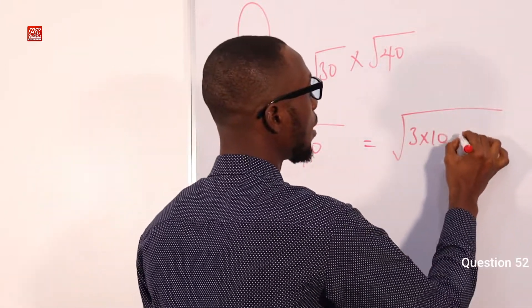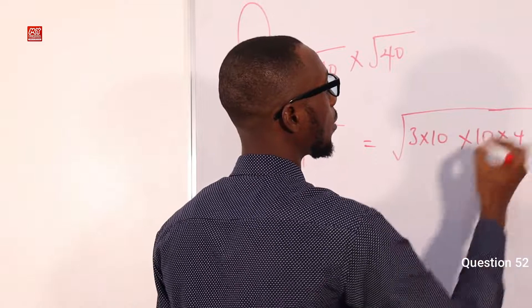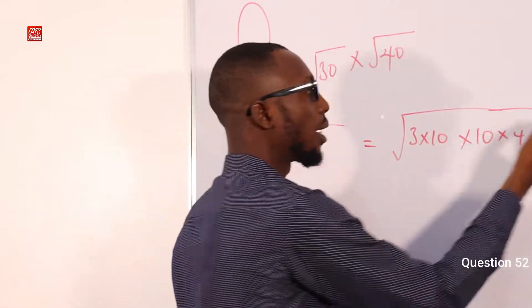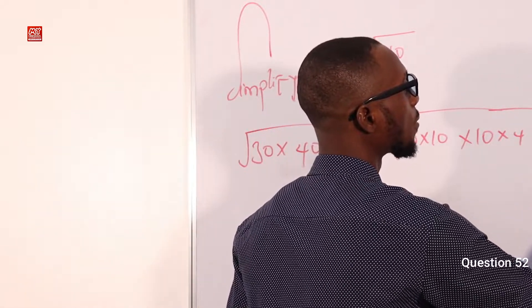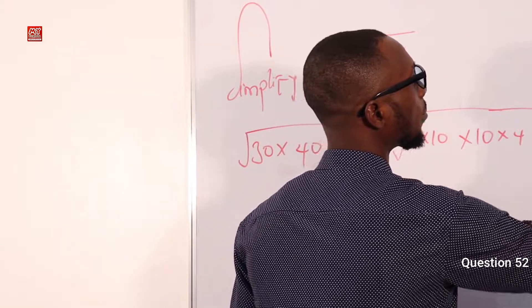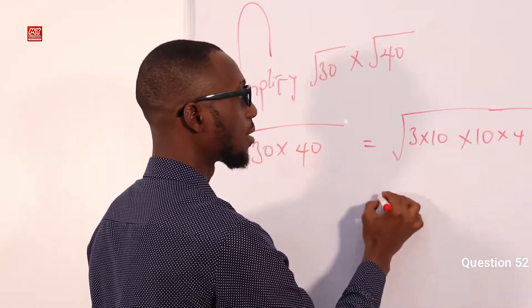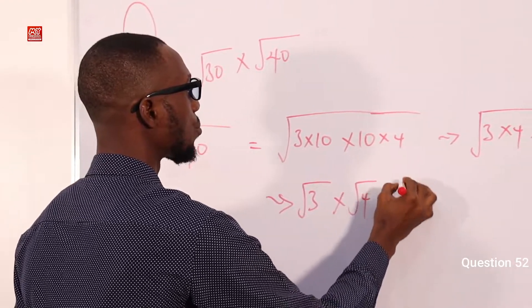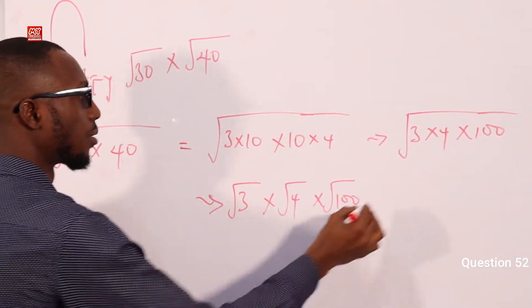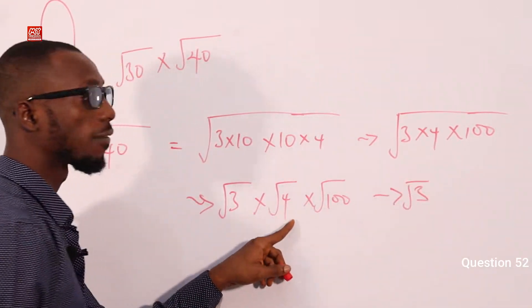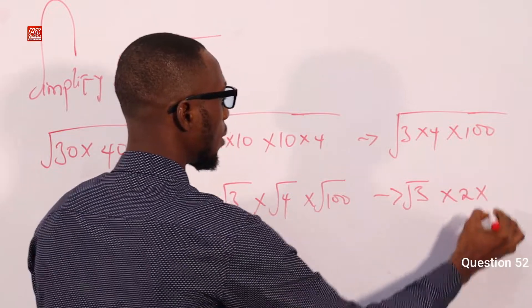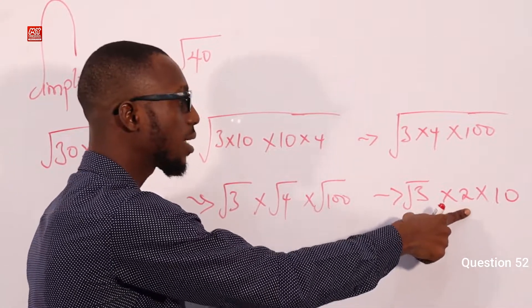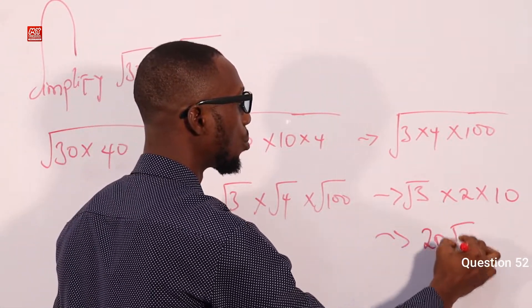30 is 3 times 10, and 40 is 10 times 4. So 10 times 10 is 100. It is correct to say 3 times 4 times 100. Moving ahead, we can split the roots: root 3 times root 4 times root 100. Square root of 4 is 2, square root of 100 is 10. So we have 10 times 2 times root 3, giving 20 root 3.